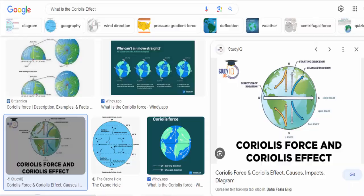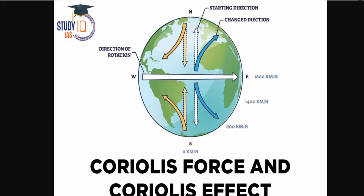It's important to note that the Coriolis effect does not cause objects to change their direction but rather alters the path they would naturally follow on a non-rotating Earth.